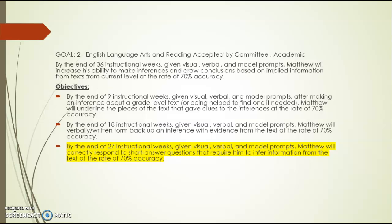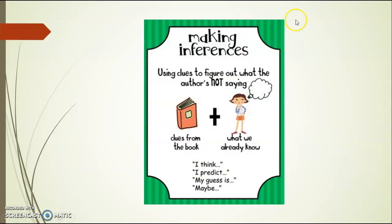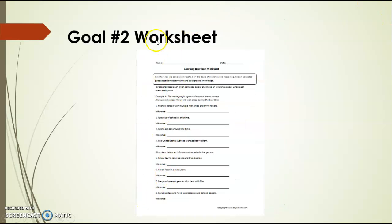For goal number two, we're going to be responding to short questions that require us to infer — to make predictions, to guess. Making inferences is using clues to figure out what the author is not saying. We use clues from the text plus what we already know and have already experienced to make inferences, meaning we project — we say 'I think,' or we guess. That's what we're going to do with this worksheet, which is the Goal Number Two worksheet called the Learning Inferences Worksheet.